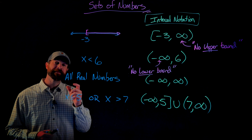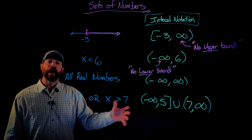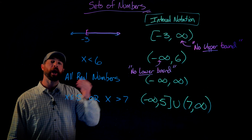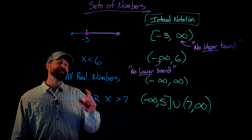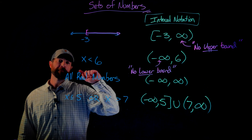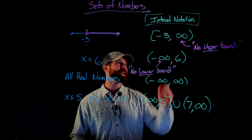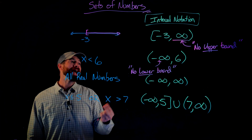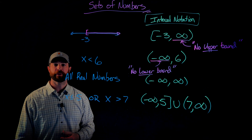Before we finish, I want to make something very clear. Infinity is not an actual bound of any sort. We put positive infinity when there is no upper bound for the set — there's no greatest number. If there is no lower bound, we use negative infinity. For that reason, you'll never see negative infinity in the upper bound position of interval notation, and you'll never see positive infinity on the left-hand side of interval notation.